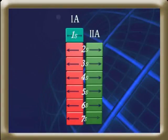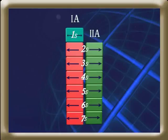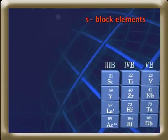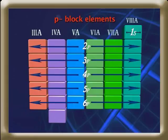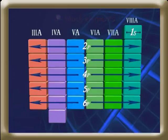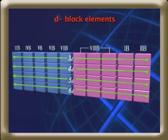Elements with electronic configuration ns¹ and ns² in their outermost shell come under s block elements — look at groups 1A and 2A, they belong to s block. Elements with electronic configuration ns²p¹ to ns²p⁵ in the outermost shell come under p block elements — groups 3A, 4A, 5A, 6A, and 7A belong to p block. The d block and f block elements are known as transition and inner transition elements respectively.